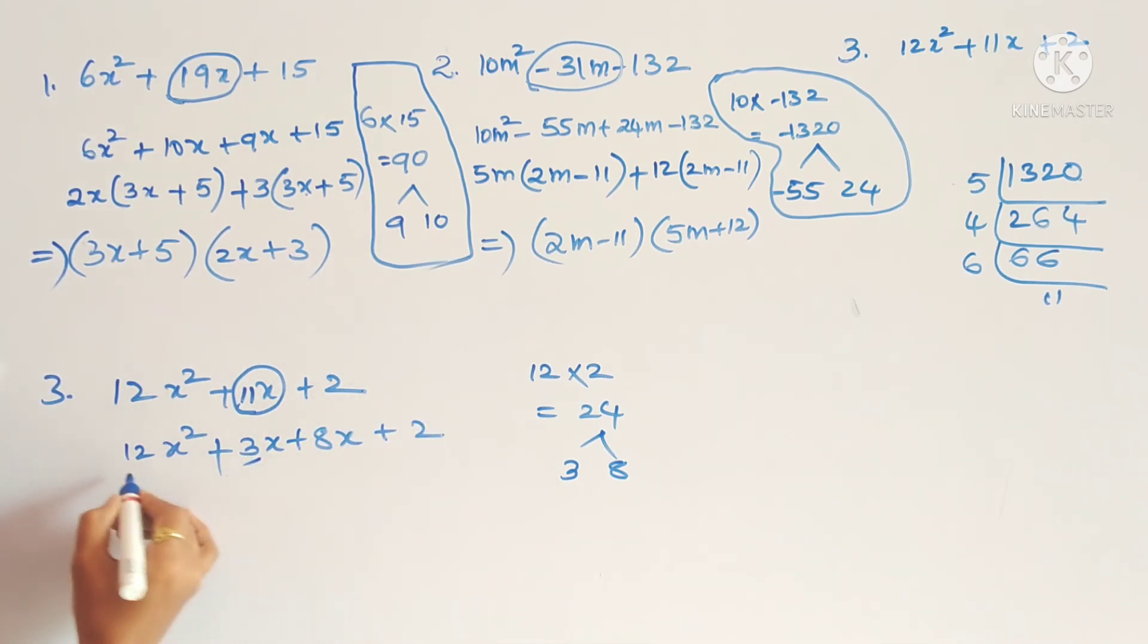So 12x square plus 11x we will write as 3x plus 8x plus 2. So 3 and 12, so what is the common here? 3 fours are 12. So we take 3 as common.